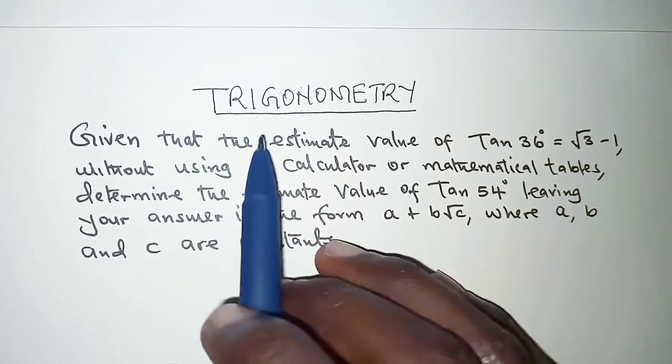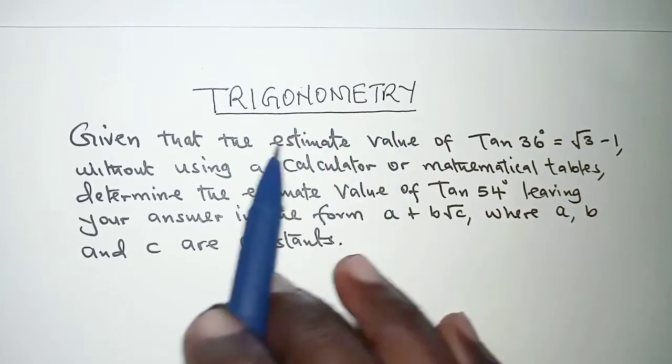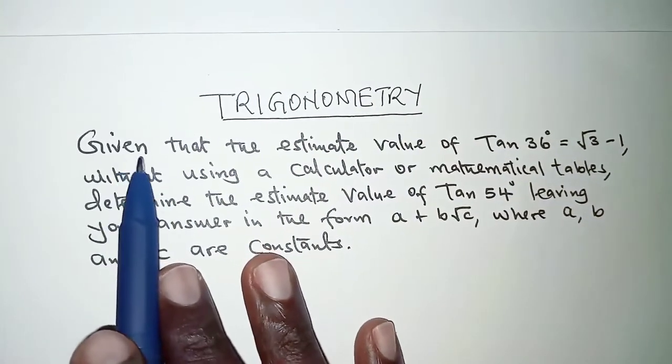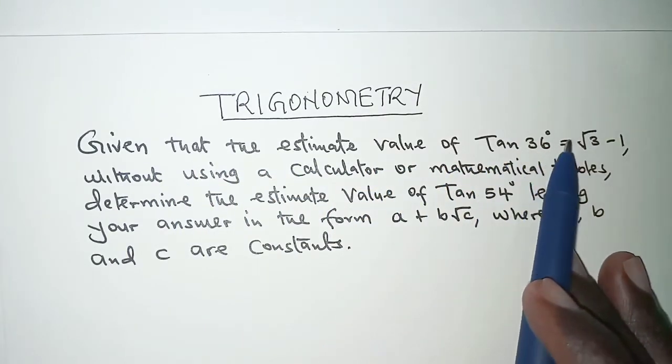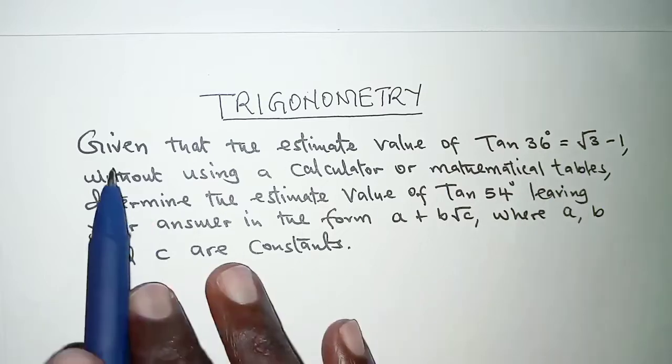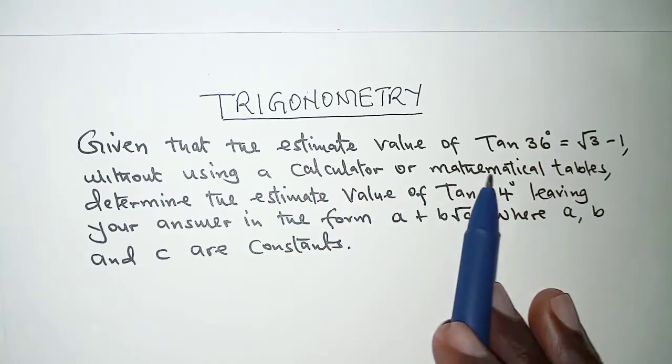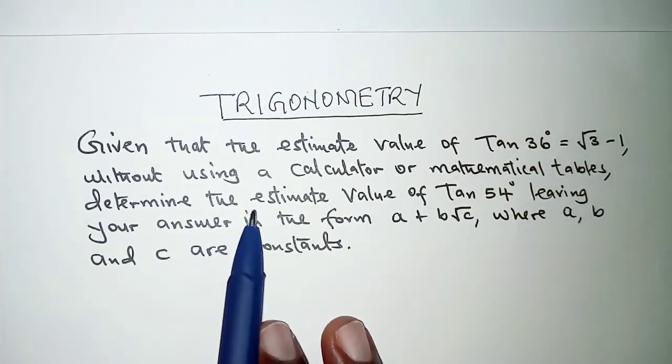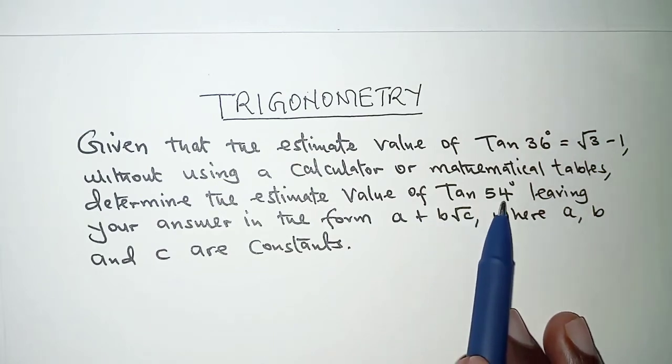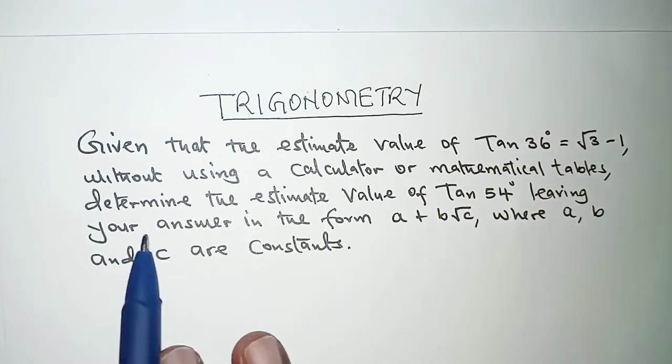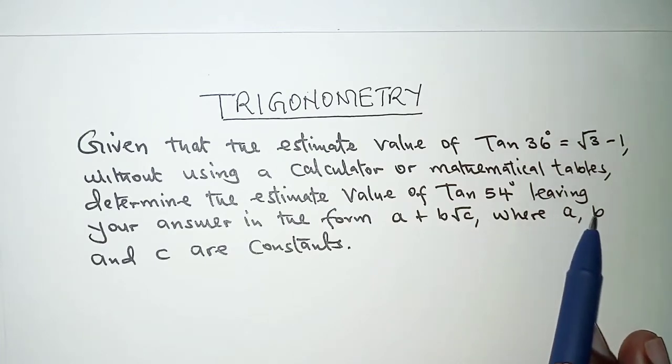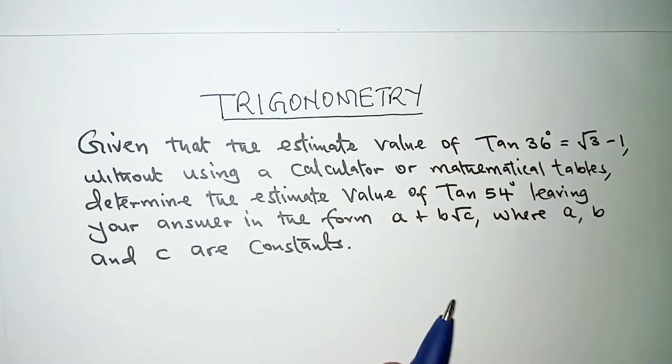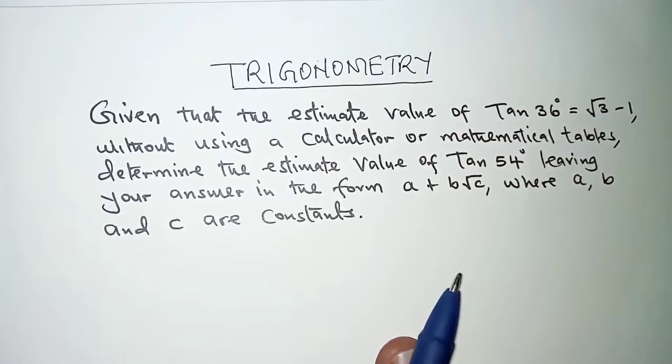Welcome. Today's presentation is on trigonometry and the question reads: given that the estimate value of tan 36 is root 3 minus 1, without using a calculator or mathematical tables, determine the estimate value of tan 54 degrees leaving your answer in the form a plus b root c, where a, b and c are constants. So in this question...